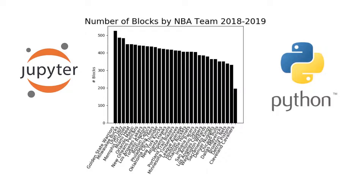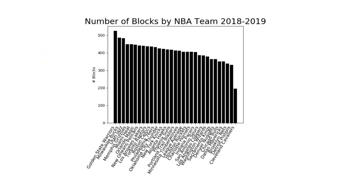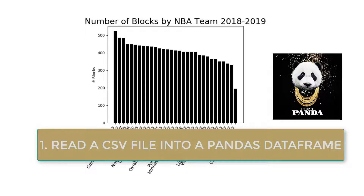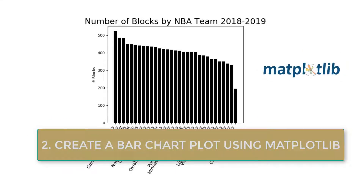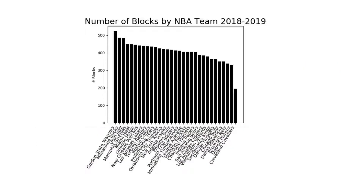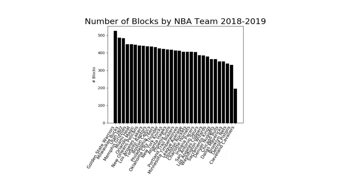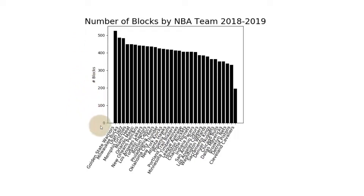From this video you will learn three things in Python: we're going to read a CSV into a pandas DataFrame object, we're going to create a bar chart plot, and we're going to save the plot as a file. This is the file we are going to create — you can see I've got 'Number of Blocks by NBA Team' in the 2018-2019 season, with teams on the x-axis and number of blocks on the y-axis.